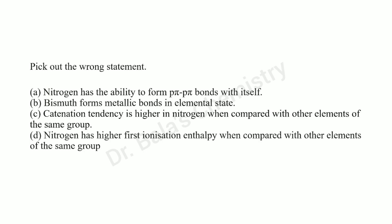Pick out the wrong statement. Nitrogen has the ability to form pπ-pπ bonds with itself — correct. Bismuth forms metallic bonds in the elemental state — correct. Catanation tendency is higher in nitrogen compared to other elements of the same group. Nitrogen's catanation tendency is actually very low — the nitrogen-nitrogen single bond is unstable.